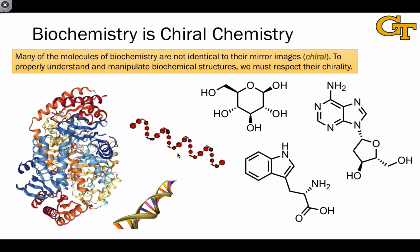The broader point this suggests is that biochemistry is chiral chemistry. By a wide margin, the vast majority of important biochemical molecules are chiral. To properly understand the behavior of these molecules, it's not sufficient just to know what's connected to what. To really appreciate how they behave, how they react, and their properties, we also have to understand something about the spatial orientations of groups and the spatial relationships between different molecules.